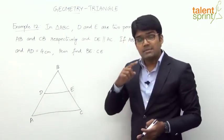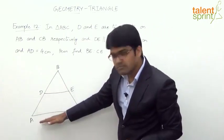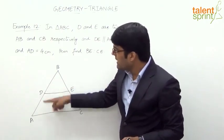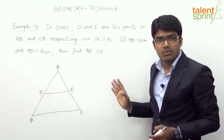Now we know that as per the basic proportionality theorem, when one line is parallel to one of the sides of the triangle, it will divide the other two sides in the same proportion.